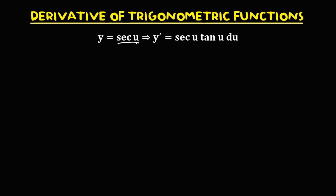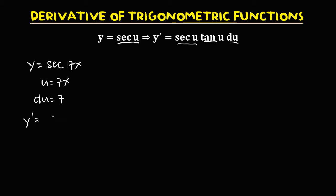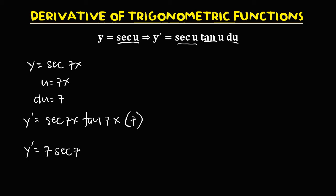For the derivative of secant u, that's secant u times tangent u times the derivative of u. So if we have y equals secant 7x, u equals 7x and du is 7. To find the derivative: secant 7x times tangent 7x times du, that's 7. So y prime is equal to 7 times secant 7x times tangent 7x.